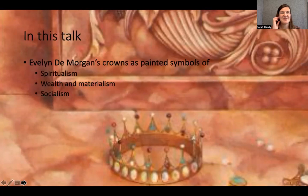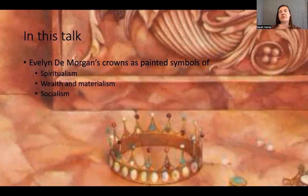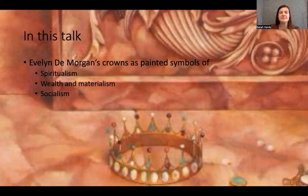Today we're going to look at a range of paintings by the late Victorian, early Edwardian artist Evelyn De Morgan, who created a breadth of pictures dealing with a range of different subjects. Something I noticed recently, whilst thinking about monarchy on the event of the Platinum Jubilee last weekend, is one symbol that De Morgan focuses on quite a lot: the crown. She uses it in a number of her paintings throughout her career, which spanned from about 1873 to her death in 1919.